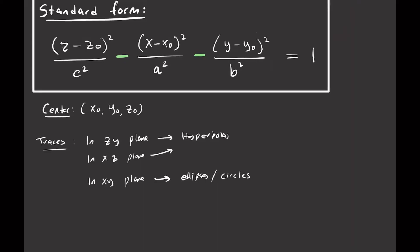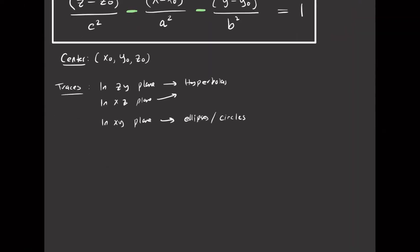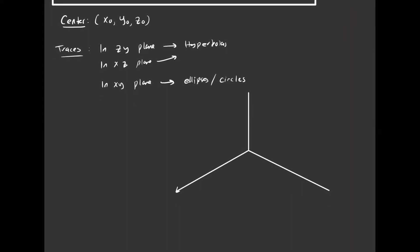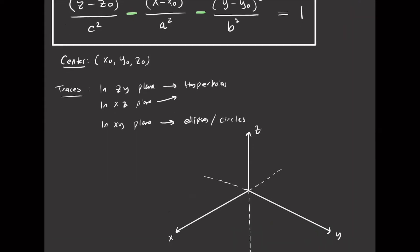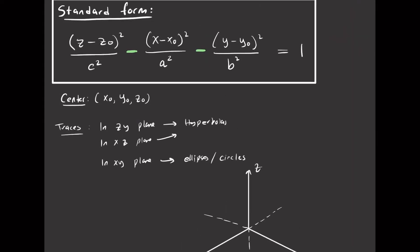Let's put this together in a 3D image. Here are the X, Y, and Z axes, including the negative axes. Since Z is positive, the surface opens along the Z axis. In the YZ plane, we have a hyperbola along the Z axis.